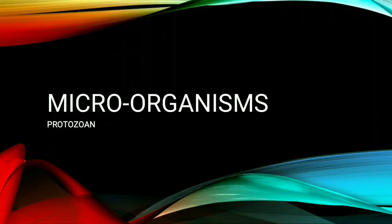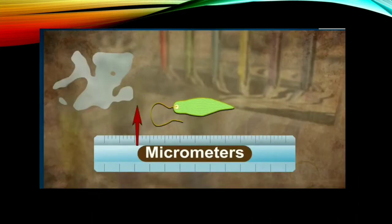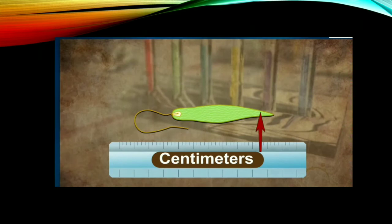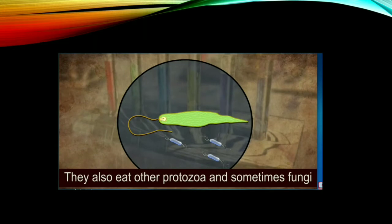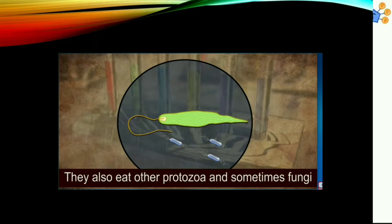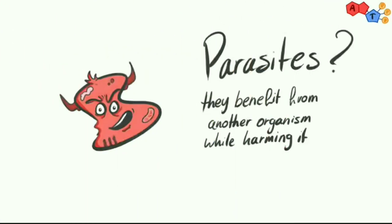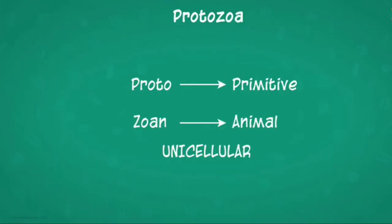Good morning students. Today we are going to learn about the third kind of microorganism: protozoa. Protozoa are very little animals. Their size varies from micrometers to centimeters. Protozoa eat bacteria, other protozoa, and sometimes fungi. Because they eat fungi, bacteria, and protozoa itself, they are called parasites. Protozoa is a unicellular organism.